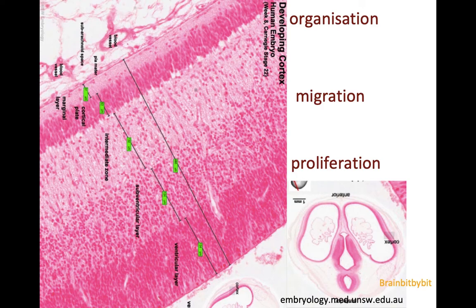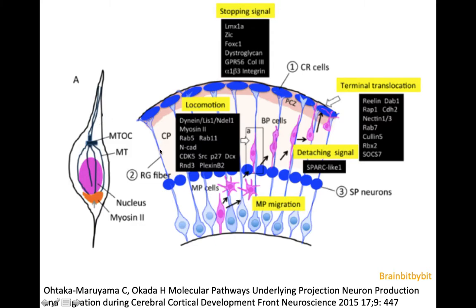In this eight-week-old embryo, the formation of the cortex can be seen with proliferation of the stem cells near the ventricle, migration of the neurons along the radial glial cell, and in the intermediate zone, organization of the cortex in the cortical plate. There is the subplate between the intermediate zone and the cortical plate, which serves as a waiting room for the neurons before they enter the cortex.